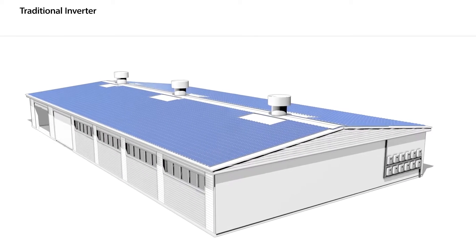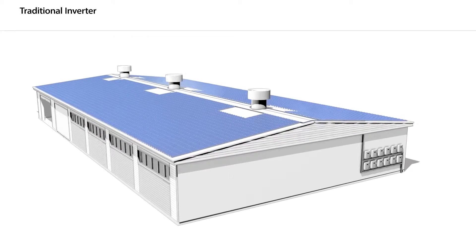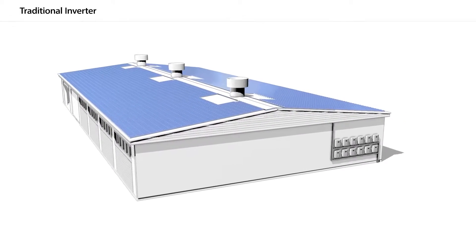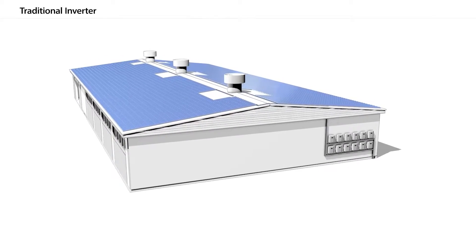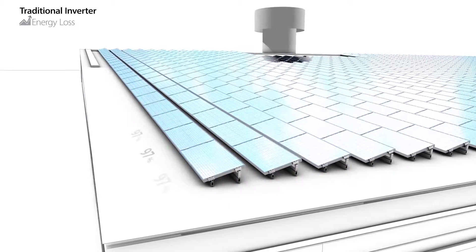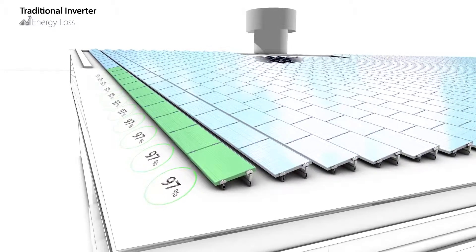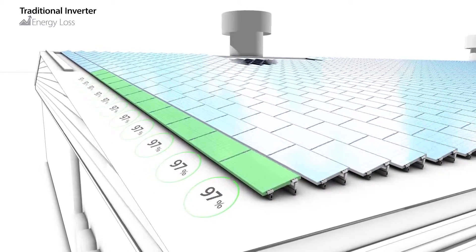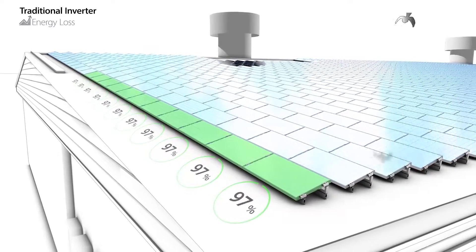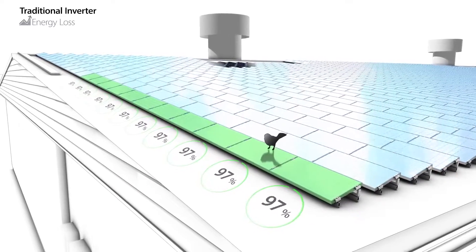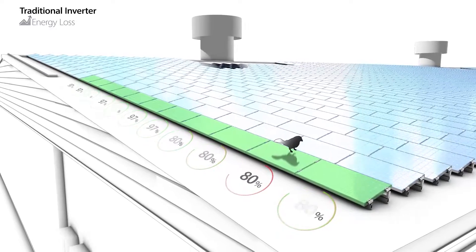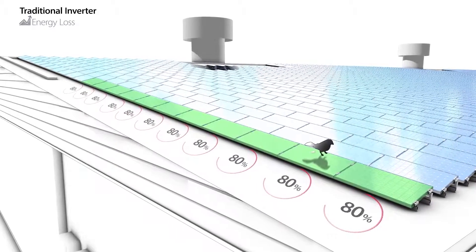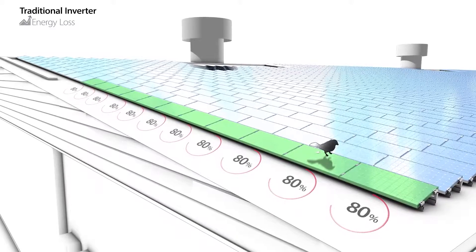Although traditional topology using string inverters is still used in the majority of large-scale installations, it suffers from a number of significant drawbacks. First, the system power output is limited. In traditional systems, panels are wired in series as a string. Each panel has its own power production profile, which is a function of its manufacturing variables, installation parameters, and shading patterns. This means that panels don't usually work at their maximum power point.